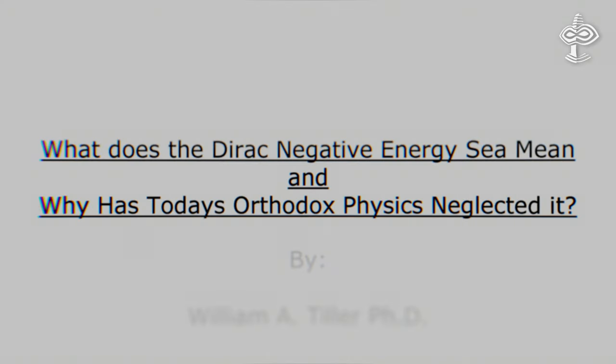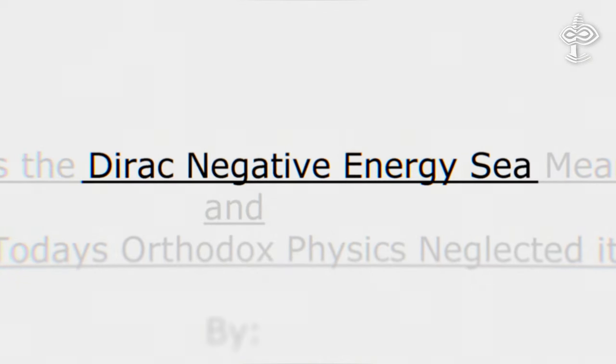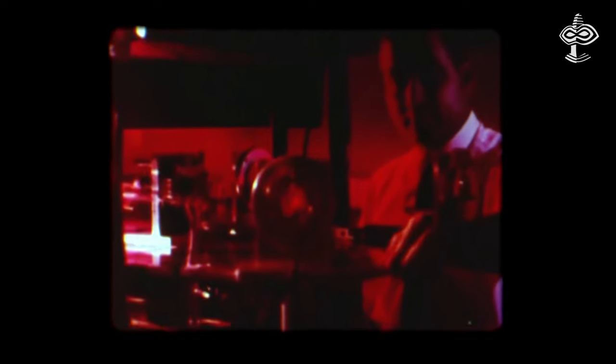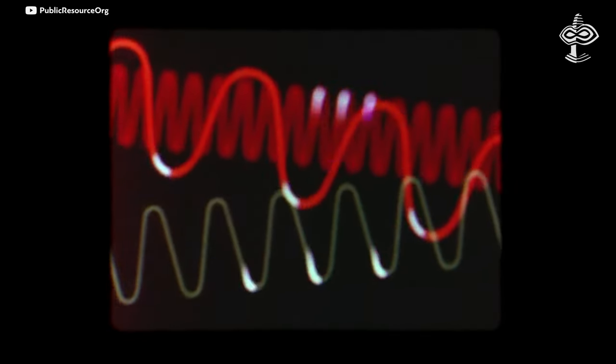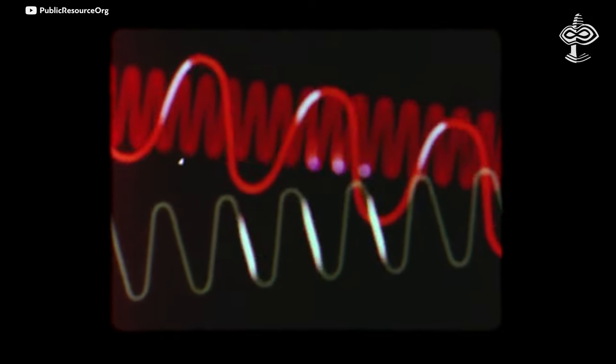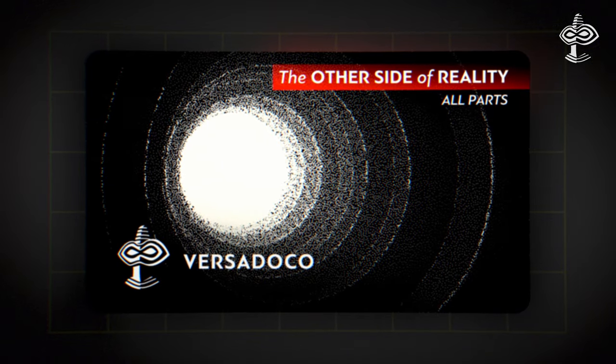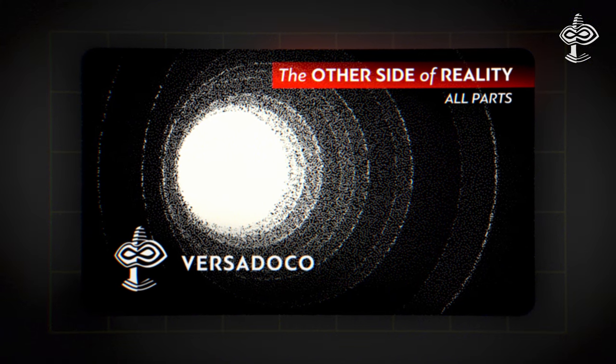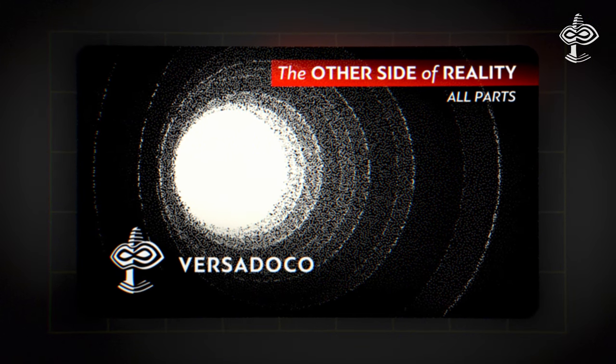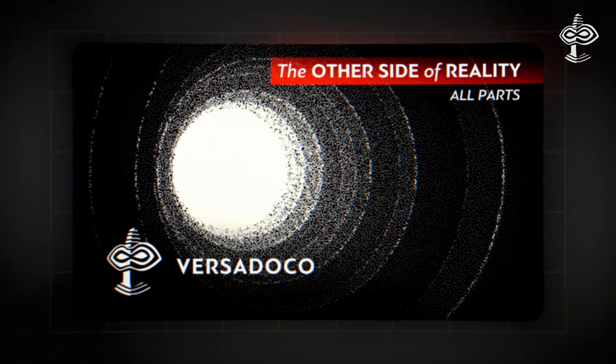Tiller revisits Dirac's fundamental idea that the physical vacuum, or the other unseen domain, is filled with negative energy states, meaning it's brimming with an unknown stuff, not emptiness. For more insights into Dirac's perspectives on the dual structure of the universe and the other side of reality, please refer to this episode.